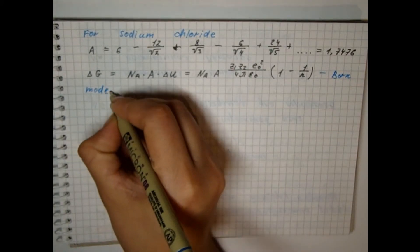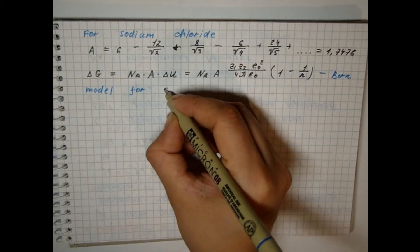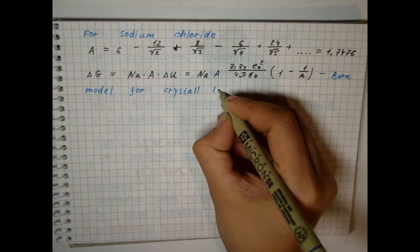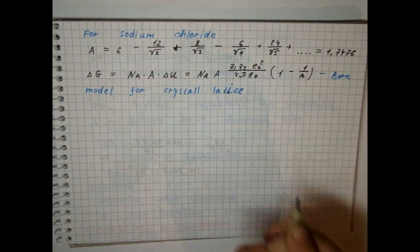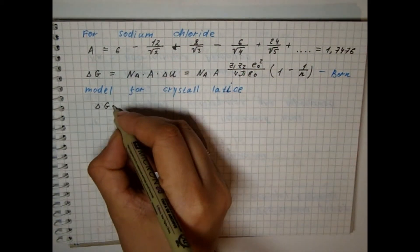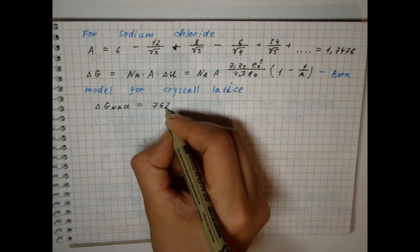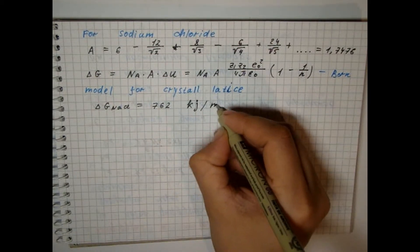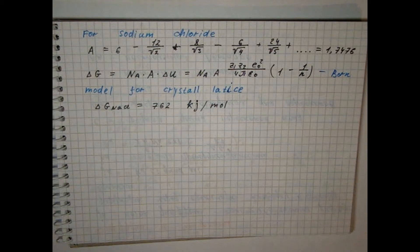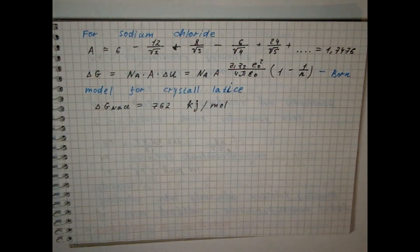The energy of the crystal lattice calculated using this formula for sodium chloride is 762 kJ per mol. So, the formation of ions during the destruction of crystal lattice requires a very large amount of energy. If this energy were not compensated by the energy of solvation, then the degree of dissociation would be practically equal to zero.